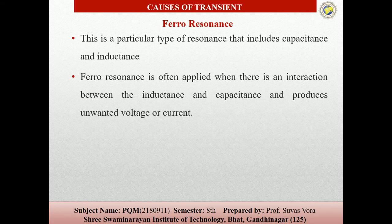Ferroresonance is often applied when there is an interaction between the inductor and capacitors and produces unwanted voltage and current. It takes place where the line capacitor is reverse biased, and we have the magnetic reactance of the core. This happens when the line capacitance equals or interferes with the magnetizing reactance of the core.